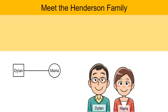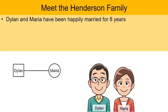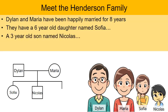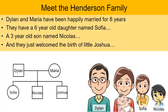Here's the Henderson family. They've been happily married for eight years. The square represents Dylan, the male, and the circle represents Maria, the female. They have a six-year-old daughter named Sophia — because Sophia is female, the circle represents her. They also have a three-year-old son named Nicholas — the square represents him. And they just welcomed the birth of little baby Joshua, another square. That diagram represents the five members of the Henderson family.